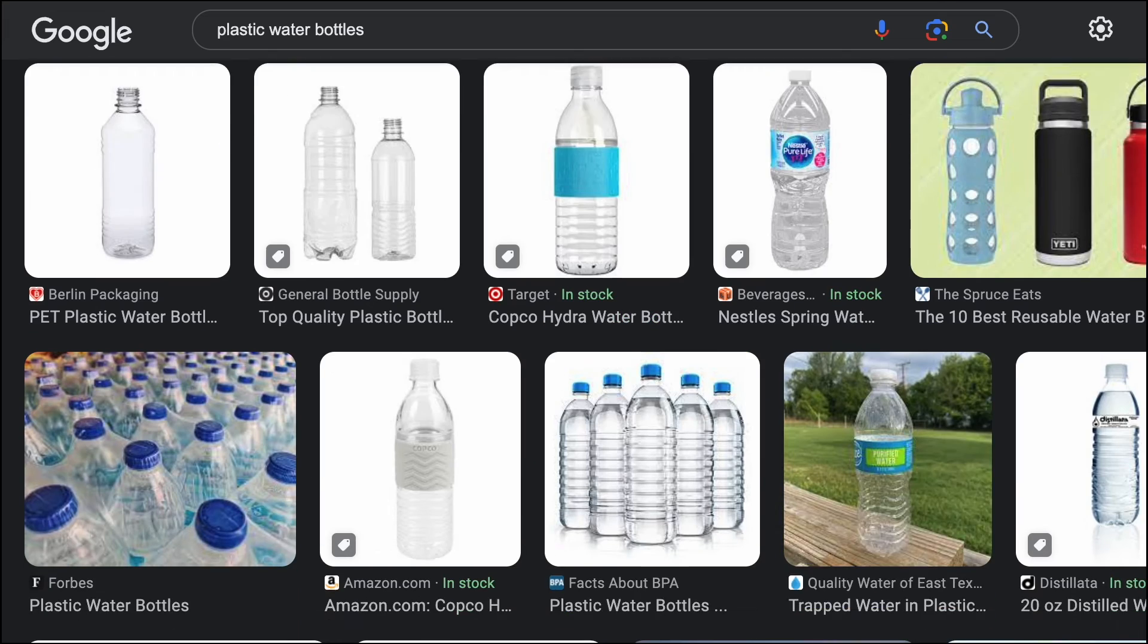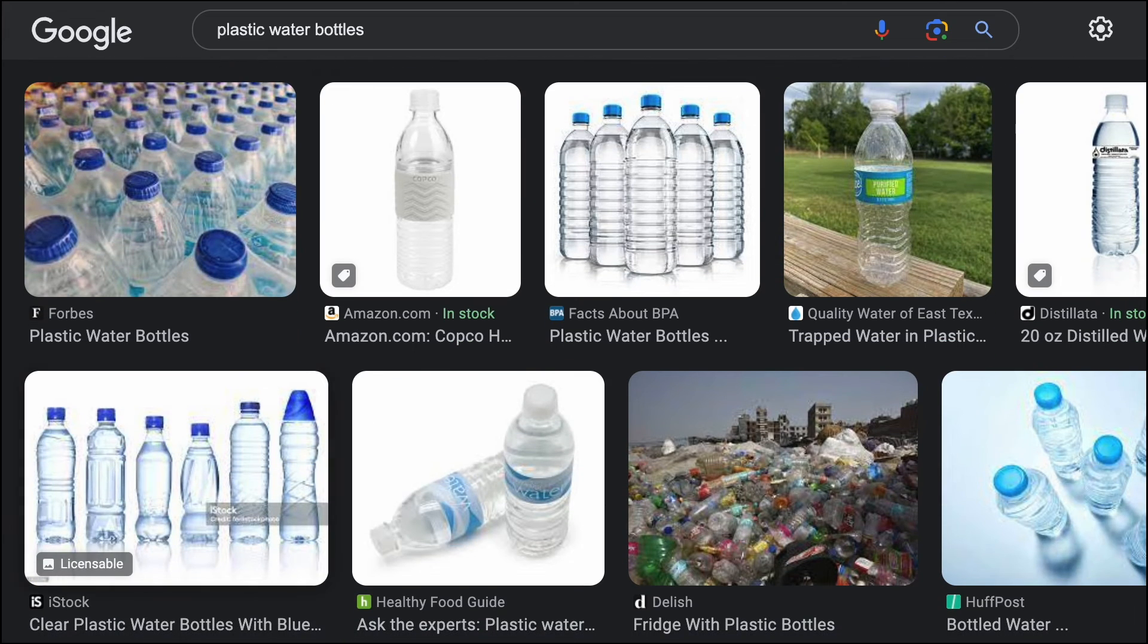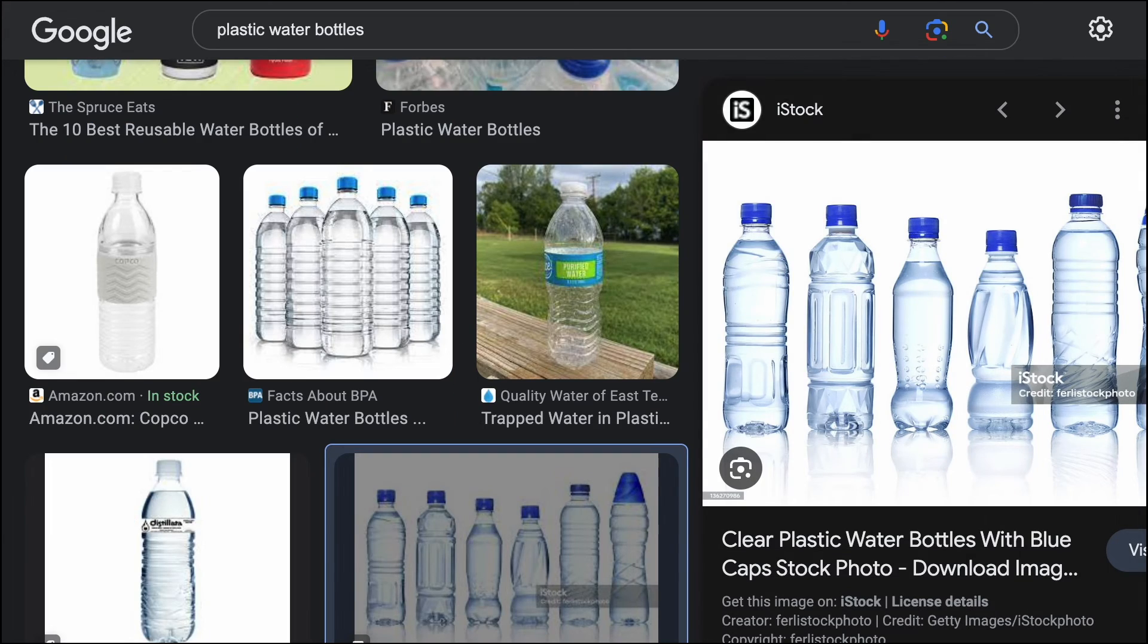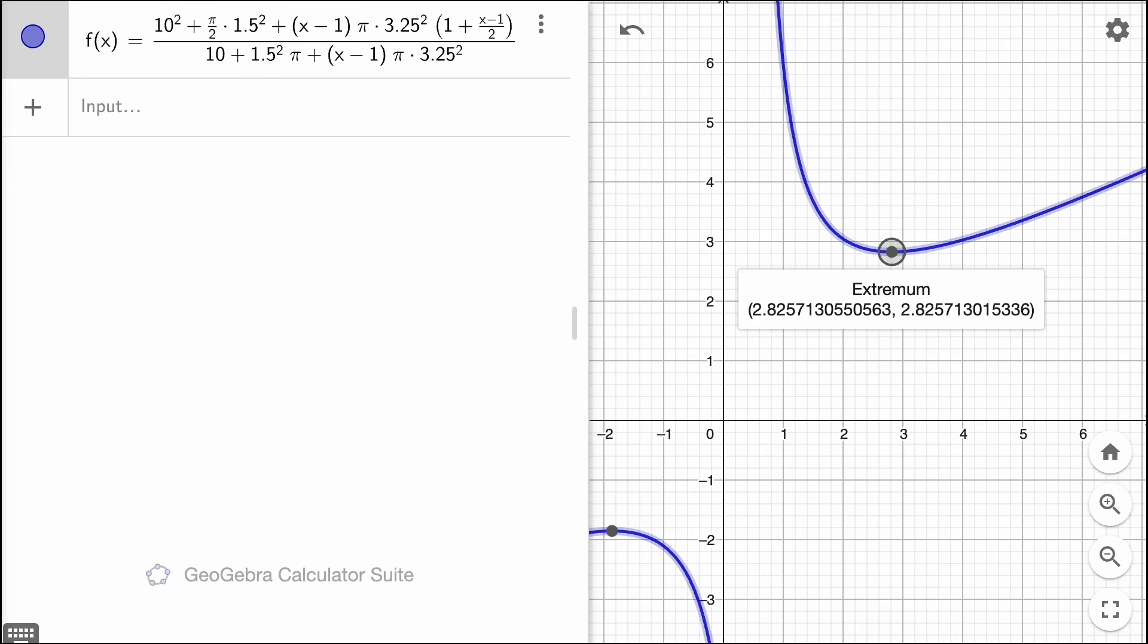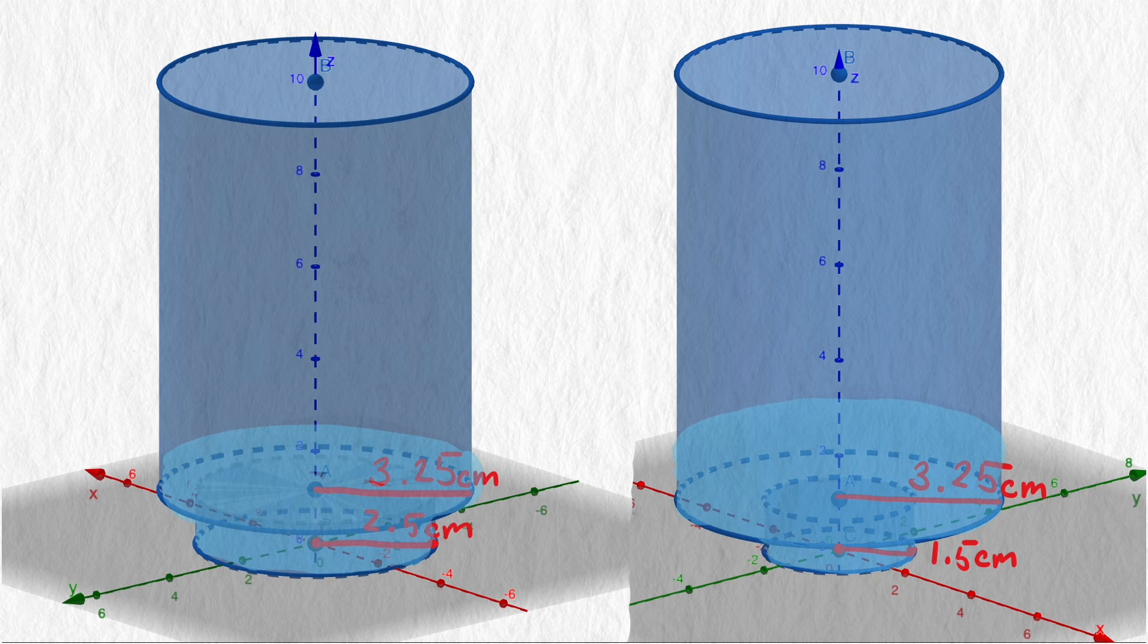Some bottle designs are even more aggressive. We could modify our model even more by making the bottom cylinder even smaller to see how much water we should add if we have one of those bottles. Let's reduce the radius for the bottom cylinder to 1.5 centimeters. In that case, the optimal height is around 2.8 centimeters. So the more aggressive the cutaways at the bottom, the higher the water level should be.